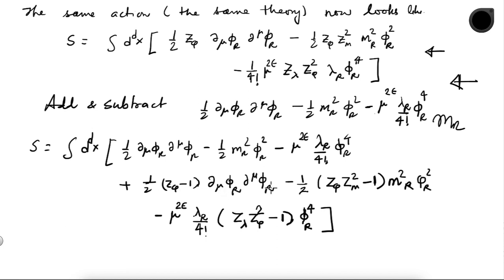Looking at the counterterm pieces: this two-point counterterm contains Z_phi which starts at order lambda_r, making it a coupling term despite looking like a kinetic term. Similarly the mass counterterm also contains factors of coupling. The four-point counterterm also has explicit factors of Z's multiplied by lambda_r.